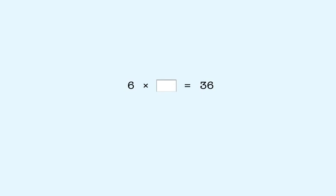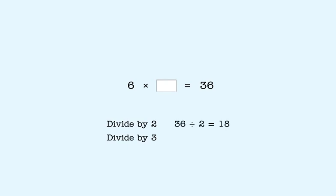Here's another one. 6 times what number equals 36? We want to answer the question: 6 times what number equals 36? If you don't remember the answer, you can find it like this. First, we divide 36 by 2, and we get 18. Now we divide 18 by 3.